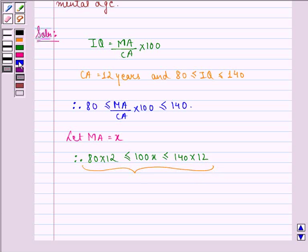We can write this as 960 is less than or equal to 100X is less than or equal to 1680, or 9.6 is less than or equal to X is less than or equal to 16.8.